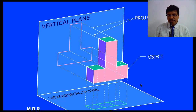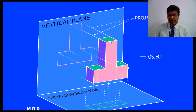When you are projecting this onto the vertical plane, seeing from the front, whatever view we are getting here is called as the front view. When you are projecting the object onto the horizontal plane, seeing from the top, whatever shape we are getting here, that figure is called as the top view.